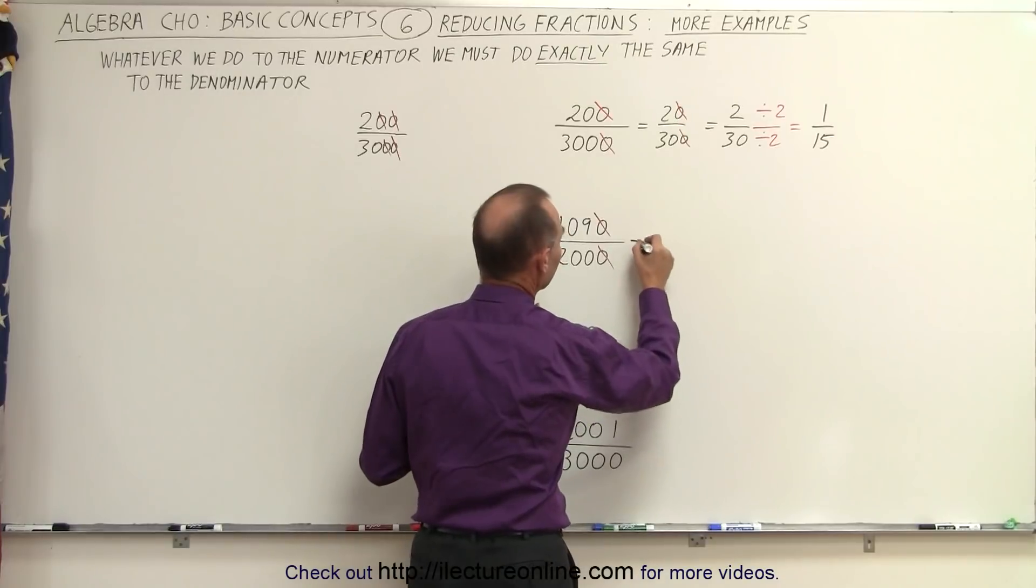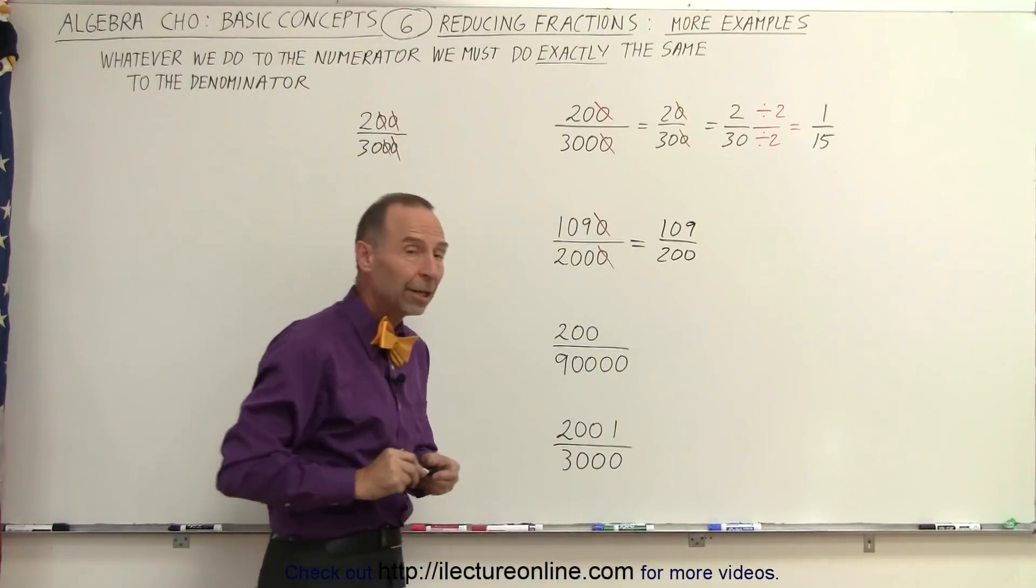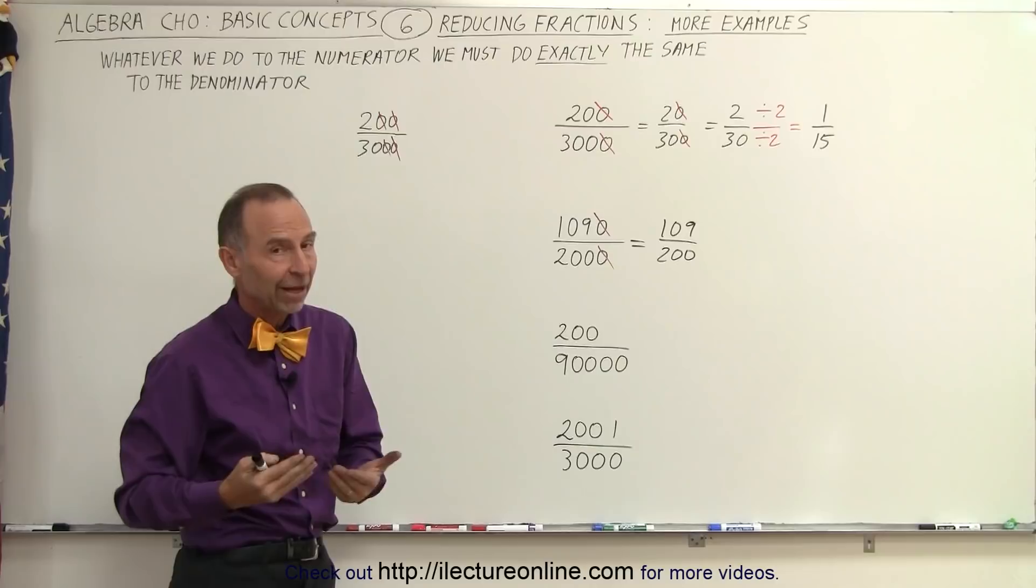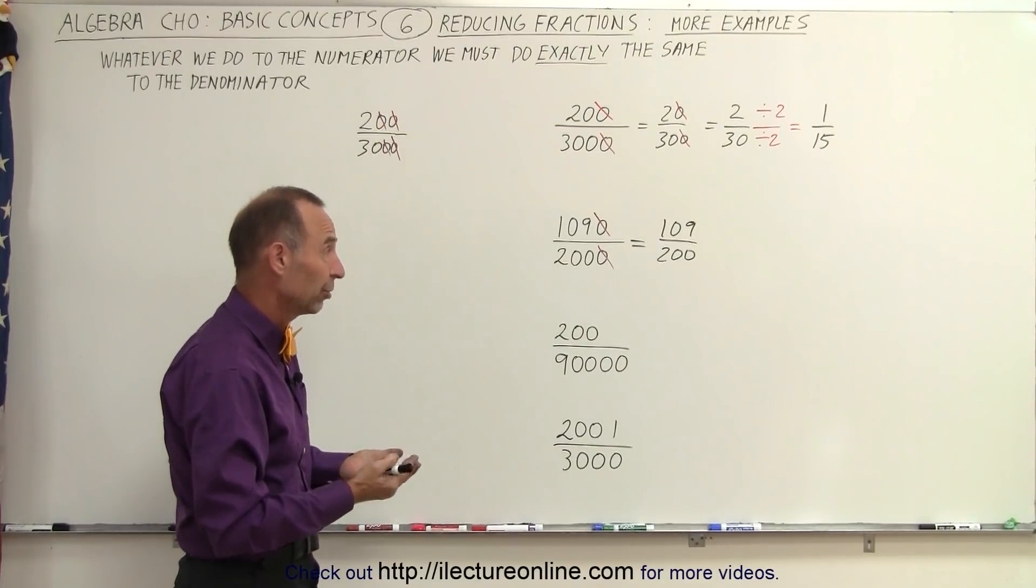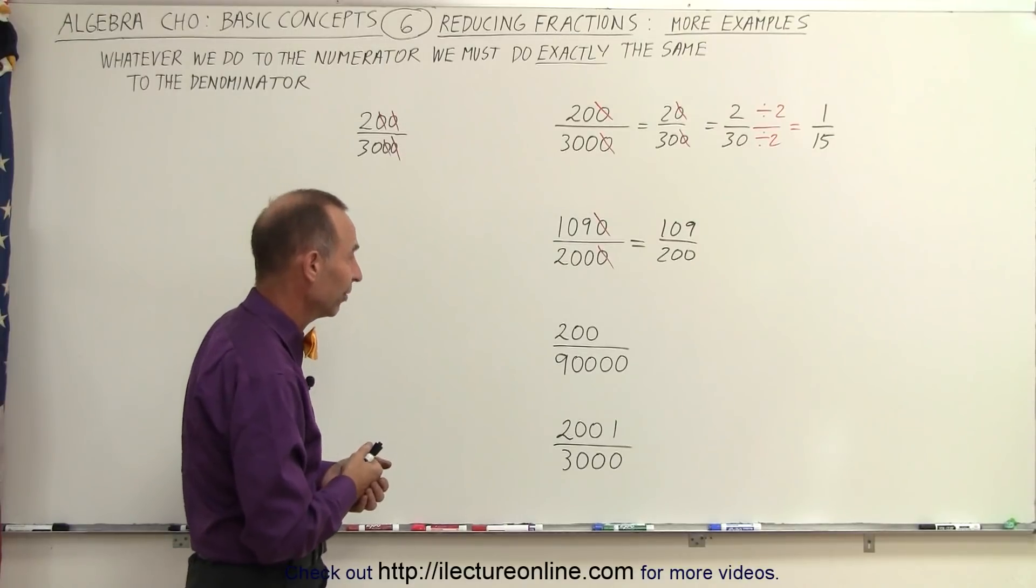So essentially, if we rewrite this, you have 109 divided by 200, and now since they both do not end in a 0, again it's the last digit that's important, you cannot divide both the numerator and the denominator by 10. It turns out that 109 is a prime number, so you cannot even go any further than this.